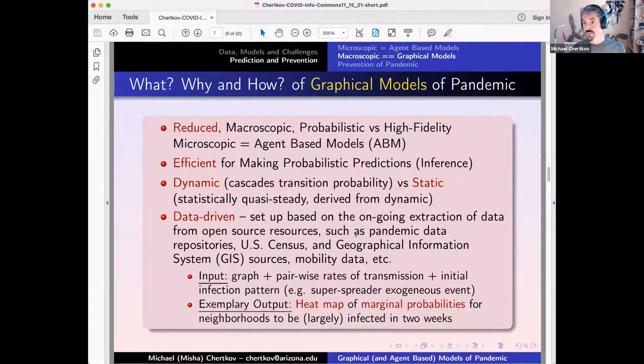Graphical models is one way of doing this coarse-graining, model reduction. So it's macroscopic, as opposed to ABMs which are microscopic. They're supposed to be efficient. They're probabilistic, so they're not answering questions affirmatively, but giving you estimations of probabilities, and they're data driven. Various inputs and various questions you can ask. In particular, what is the probability if injection of infection happened to have it spread?